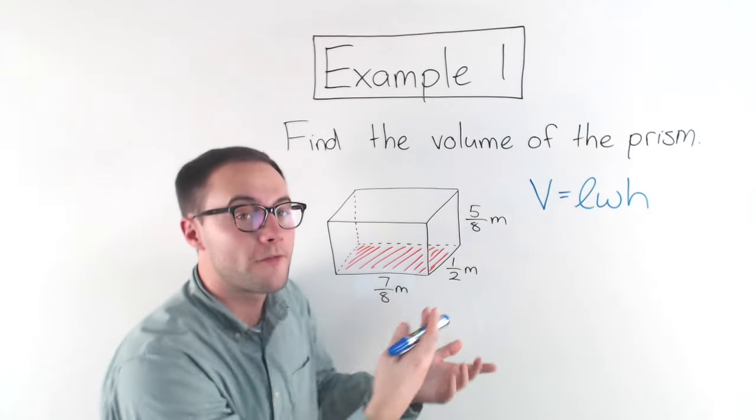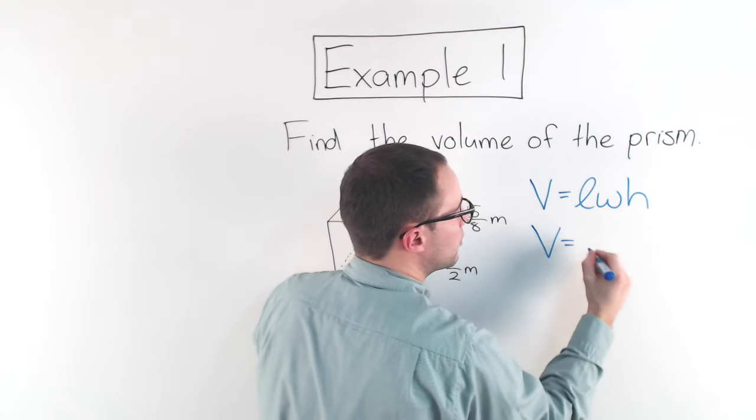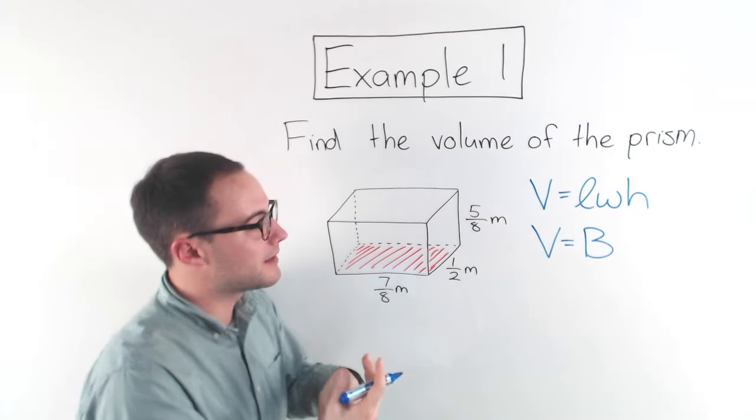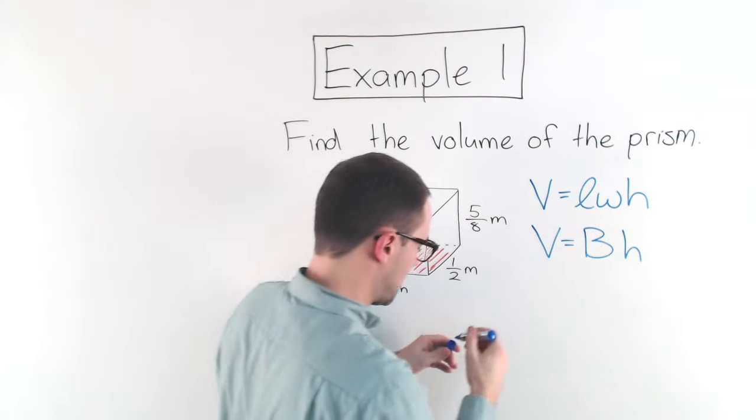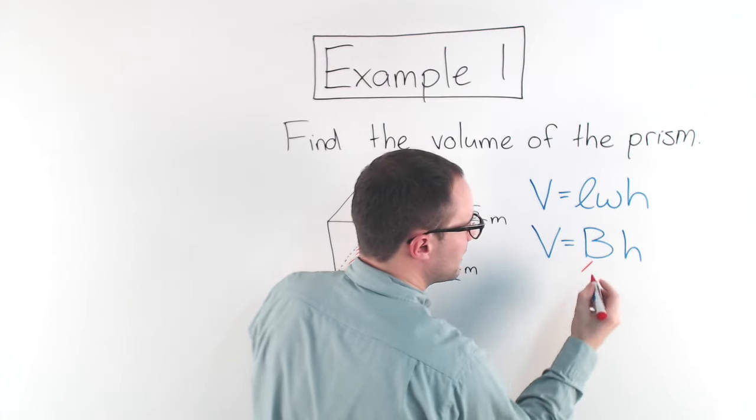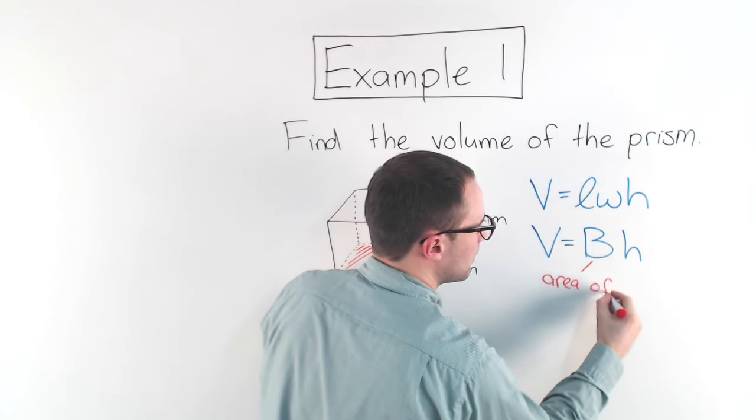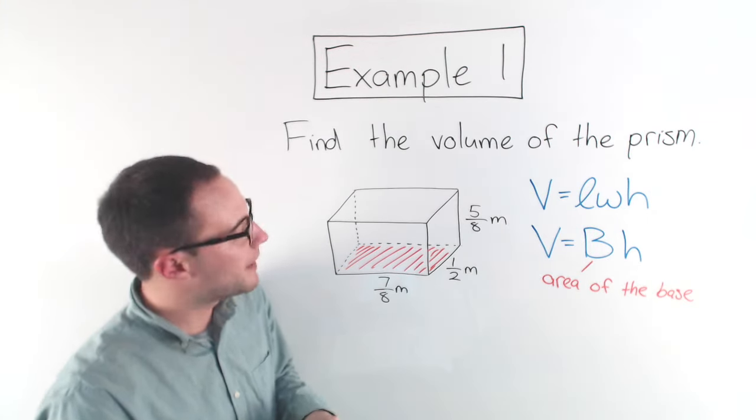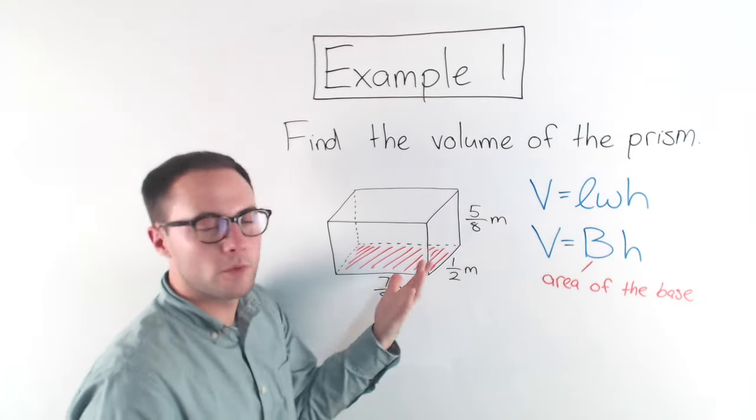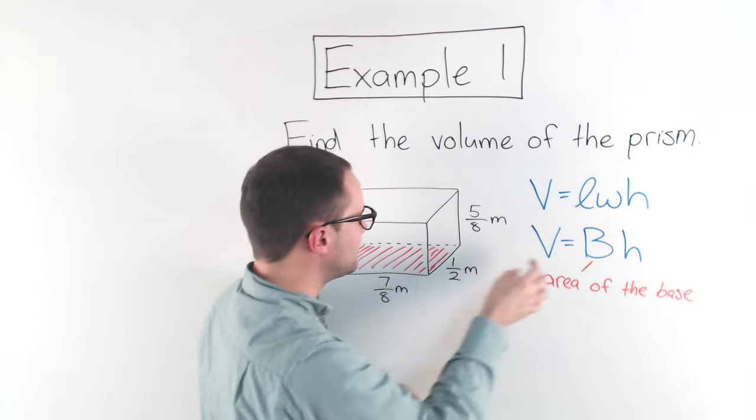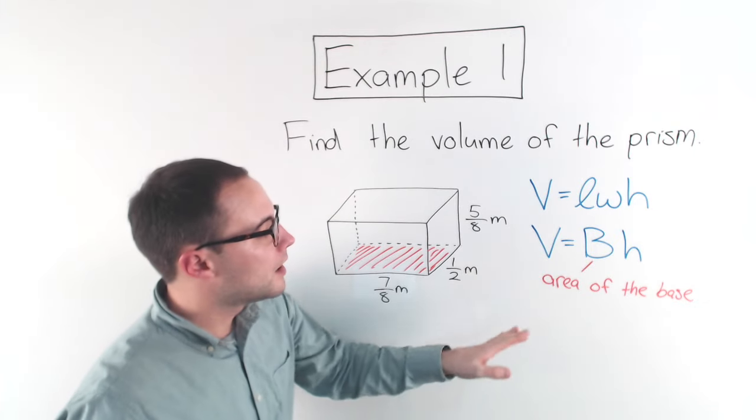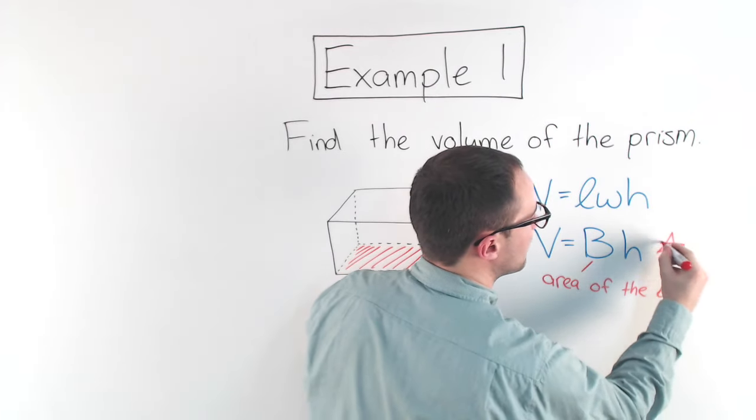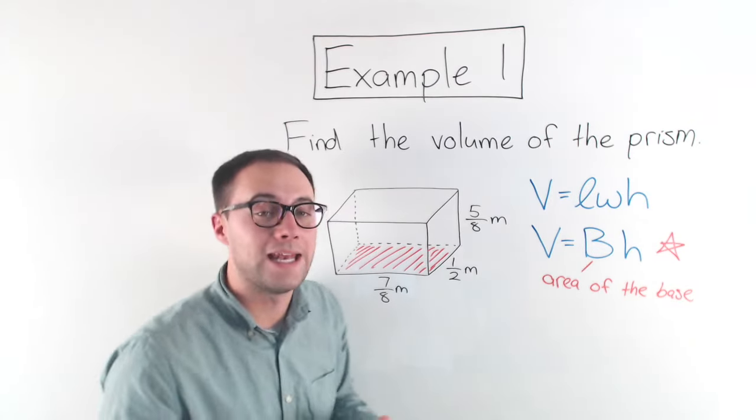So the other formula that I'm going to show you is volume equals area of the base, which we use a capital B to represent that, times the height. That's another formula, and the nice thing about this, area of the base times height. These both would work for this, because basically when you do length times width, that is the area of the base, and then you're timesing it by height. The nice thing about this is that, I'm going to put a star next to this, is that it will work for any prisms.